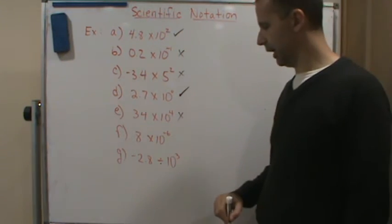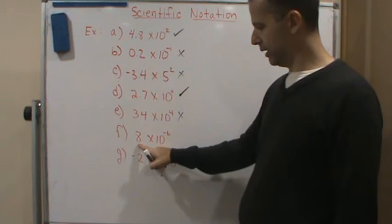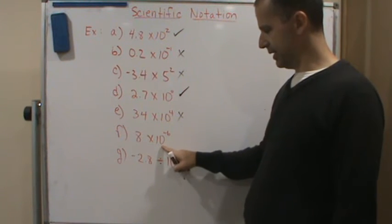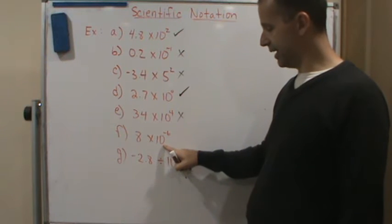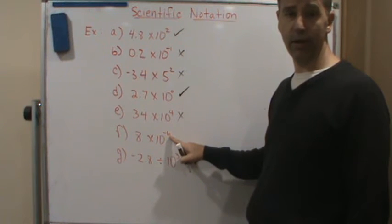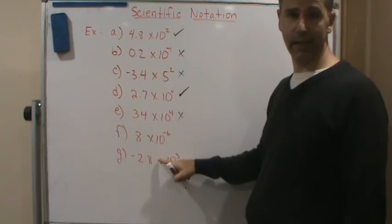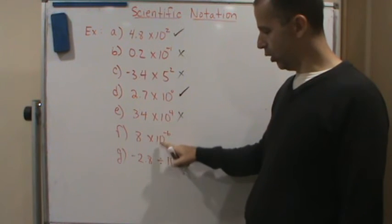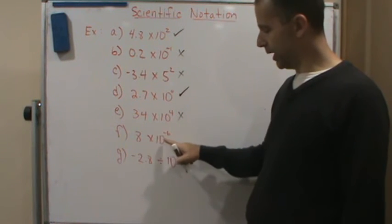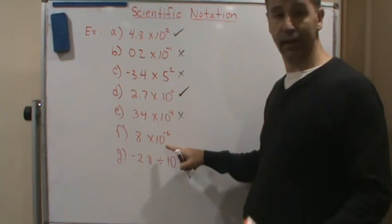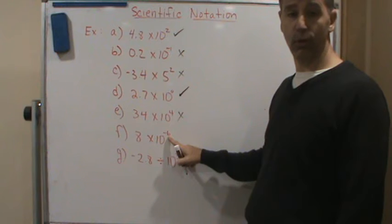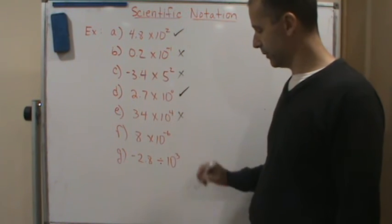Is this a number between one and ten? Yes. Is this a power of ten? Yes. The negative exponent doesn't matter — this just means you're dividing by a power of ten, but you're still multiplying by a power of ten. It's the way it's written — is this a power of ten? Yes, even though it's a negative exponent, it's still a power of ten. So this is written in scientific notation.